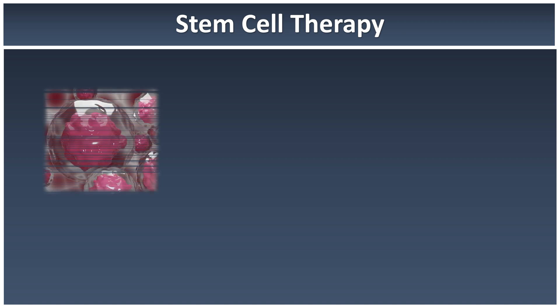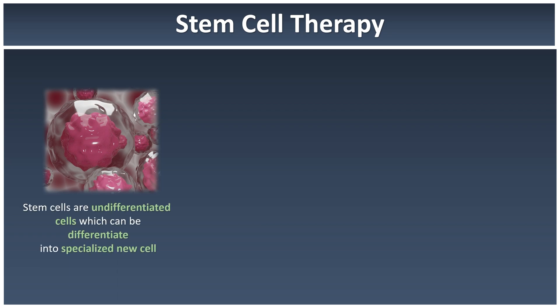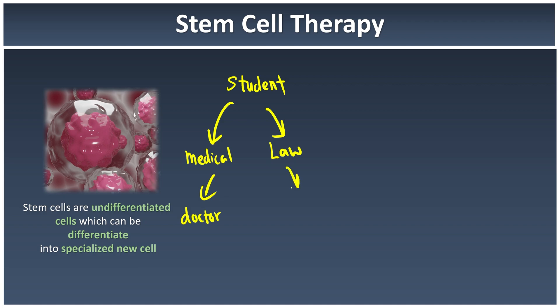Now let's explore stem cell therapy. Stem cells are immature, undifferentiated cells which can later be differentiated into specialized new cells. Think of stem cells like students — we don't have any specific skill yet, but if sent to medical school we can become doctors, or if sent to law school we can become lawyers. Stem cells are just raw materials or building blocks that haven't developed any specialized function yet, but will as they grow.